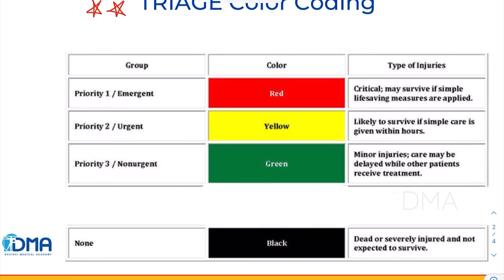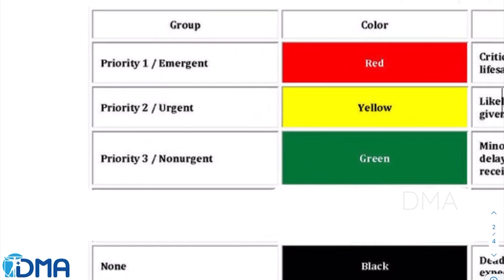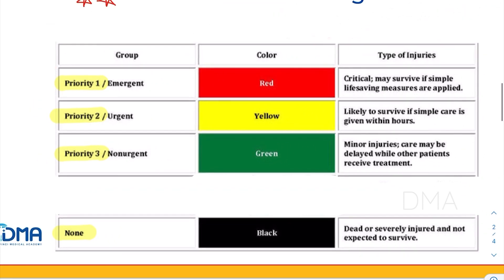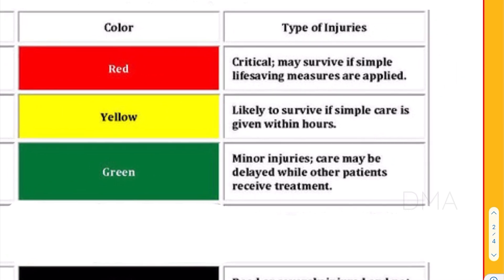There is red, yellow, green, and black. Red being the highest priority group — priority number one is given for the red category. Yellow being the second priority group, green being the third priority group, and black is not given much priority. So we can look at them one by one.